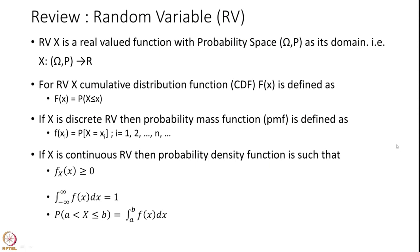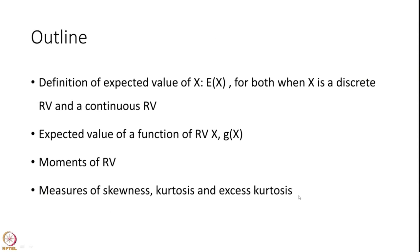We gave some examples in the previous session and now we move on to further properties of random variables. In this session, we plan to give a definition of expected value of X, written as E of X, for both discrete and continuous random variables. We will also define the expected value of a function g(X), define the moments of a random variable, and give details on the measures of skewness, kurtosis, and excess kurtosis.